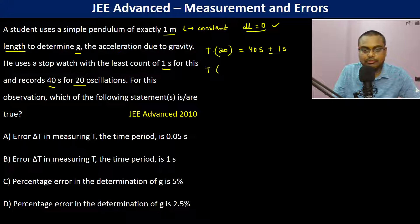Therefore, the time period of 1 oscillation is 40 divided by 20 seconds, plus or minus 1 by 20 seconds, which is 2 plus or minus 0.05 seconds. This is the time period for 1 oscillation.